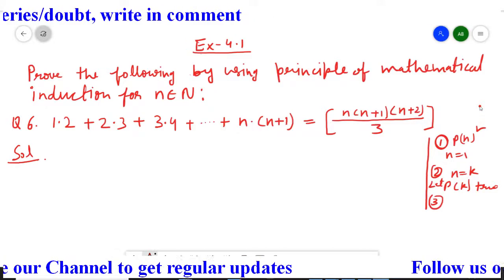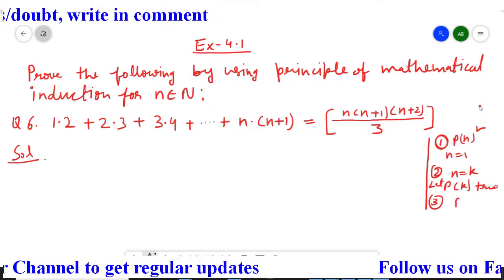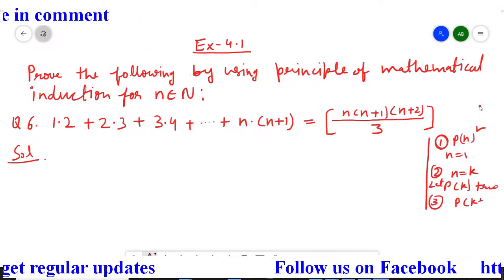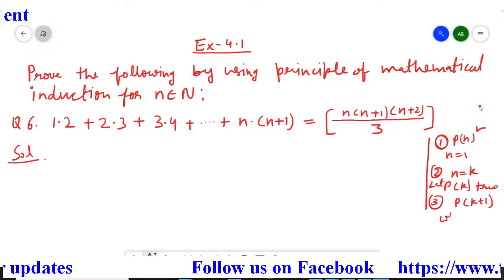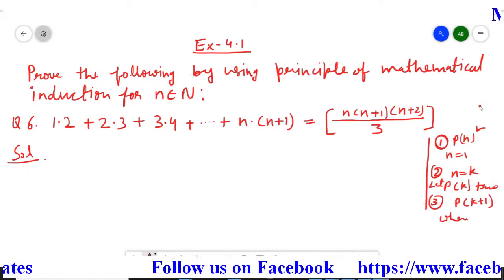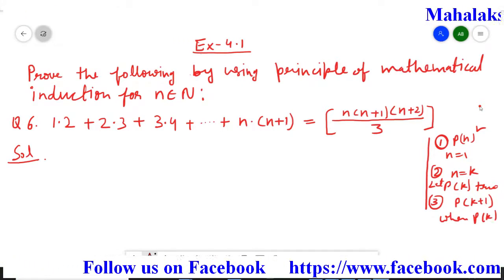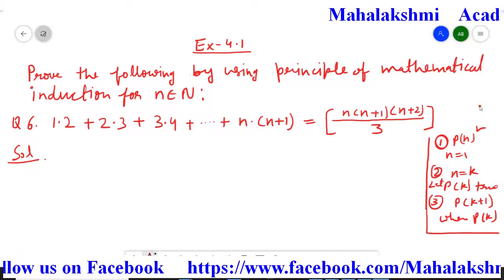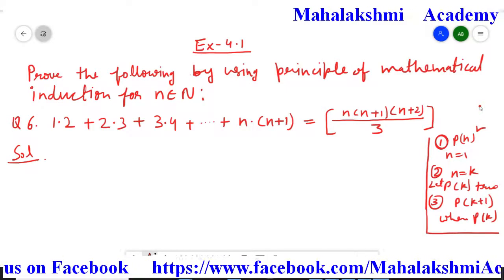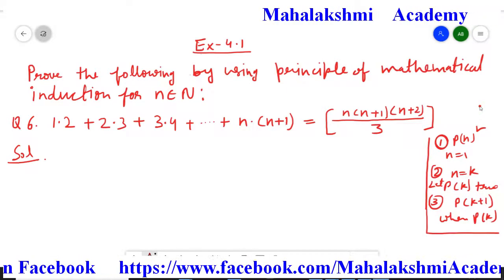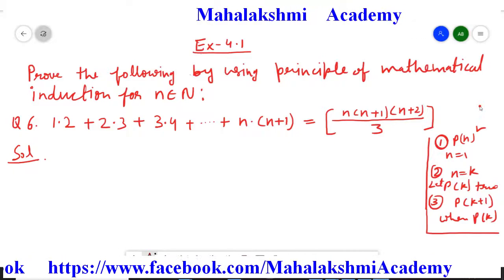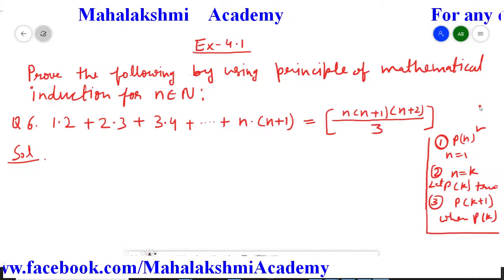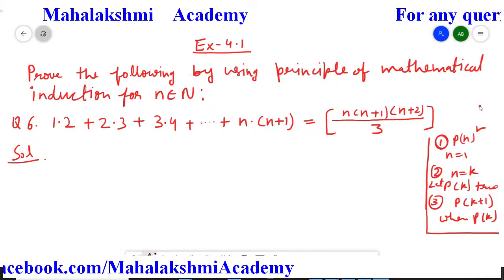The third step is we have to prove P(k+1) is true when P(k) is true. Mainly this principle carries these three steps. So, by keeping these three steps in our mind, we have to solve it one by one. What is the first step here? We are going to assume the statement as P(n).